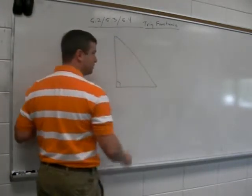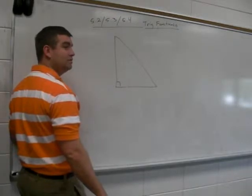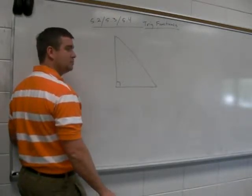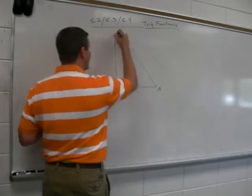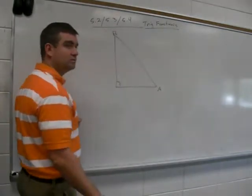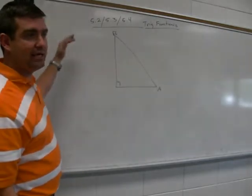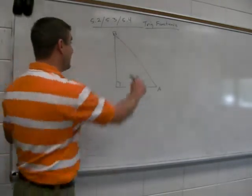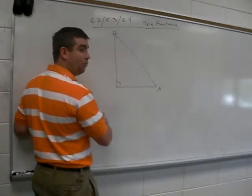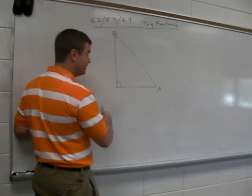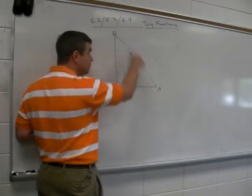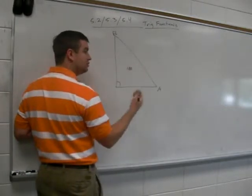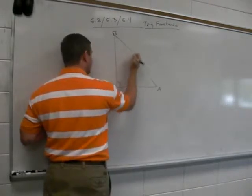Here we go. Trig functions that we're dealing with are a ratio of a right triangle's sides and angles. Here's a right triangle. We have two acute angles. Angle A and angle B are acute angles of the right triangle.